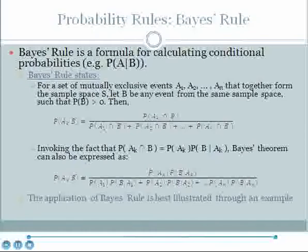Let's take a look at Bayes' Rule. Bayes' Rule is a formula for calculating conditional probabilities. That is, the probability that some event A will occur given that some event B has occurred.